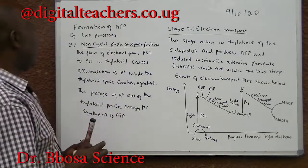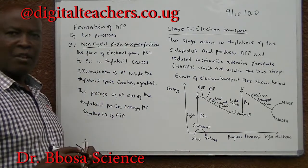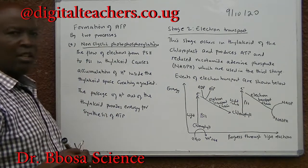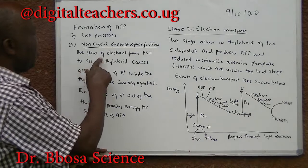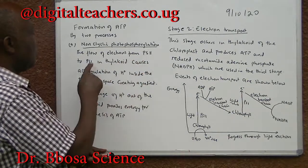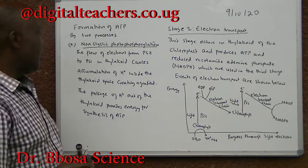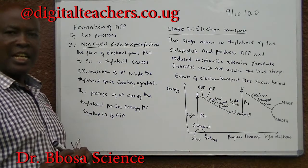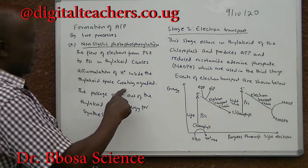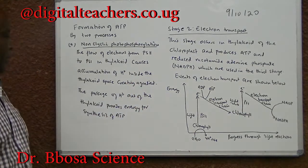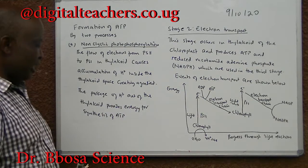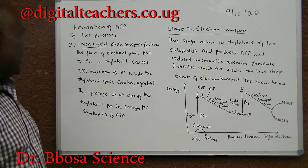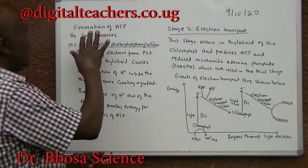Formation of ATP: ATP is formed by two processes. Non-cyclic photophosphorylation — the flow of electrons from PS2 to PS1 in the thylakoid causes accumulation of hydrogen ions inside the thylakoid space, creating a gradient. The passage of hydrogen ions out of the thylakoid provides energy for the synthesis of ATP.